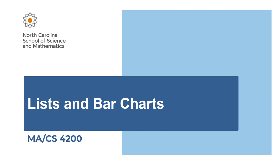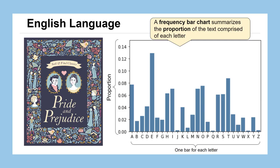In this lesson, we're going to learn how to use Python to create the bar charts that we've seen in the previous couple of lessons, and learn a little bit more about the data type that makes that all possible, the list. As we saw in previous lessons, we could take any selection of text, like the text of Pride and Prejudice, and create an associated bar chart that demonstrates the frequency of each character as its proportion of the text.